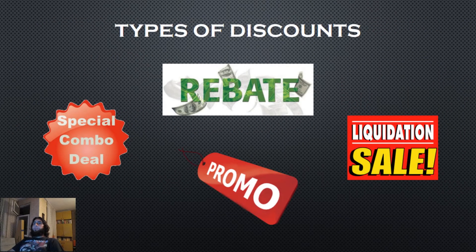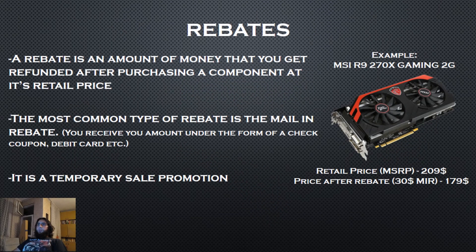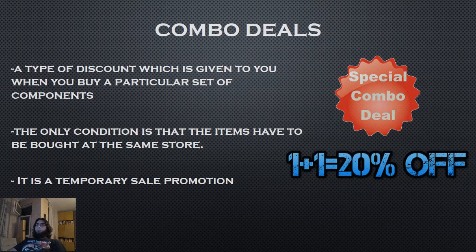Next up are the types of discounts available for PC components. I'll cover rebates, combo deals, and other types of discounts. A rebate is an amount of money you get refunded after purchasing a component at its retail price — in most cases it's a temporary sale promotion. The most common type is the mail-in rebate, where you receive your refund in the mail as a check, coupon, debit card, or another form of payment.